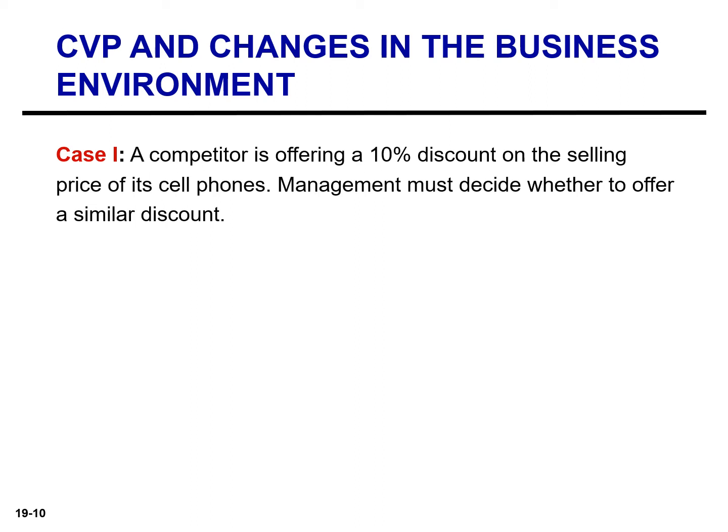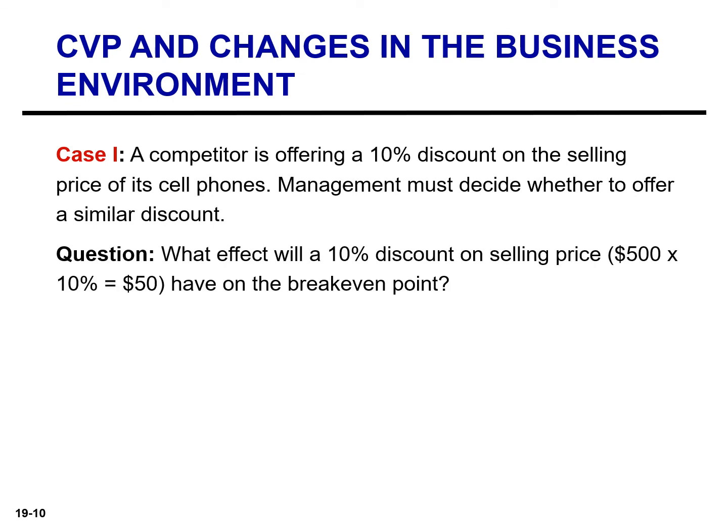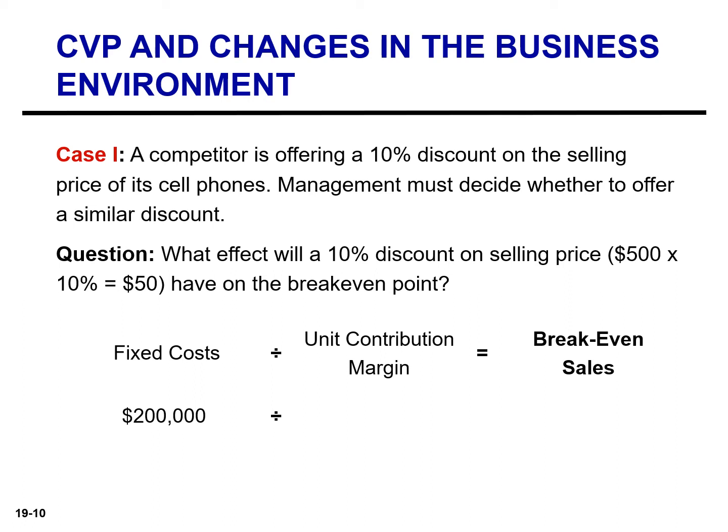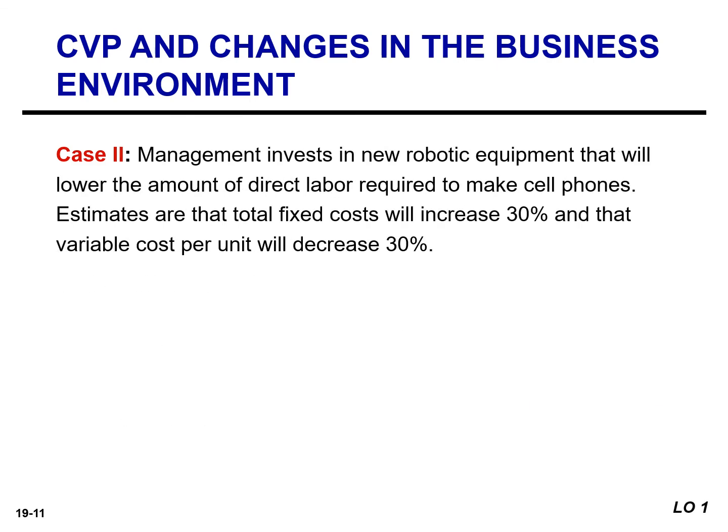In our first scenario, a competitor is offering a 10% discount on the selling price of its cell phones, and management must decide whether to offer a similar discount. We need to determine what effect a 10% discount on the selling price will have on the break-even point. A 10% discount on the selling price reduces the unit contribution margin from $200 to $150. Assuming no change in fixed cost, break-even sales are 1,333 units — meaning monthly sales must increase by 333 units in order to break even.